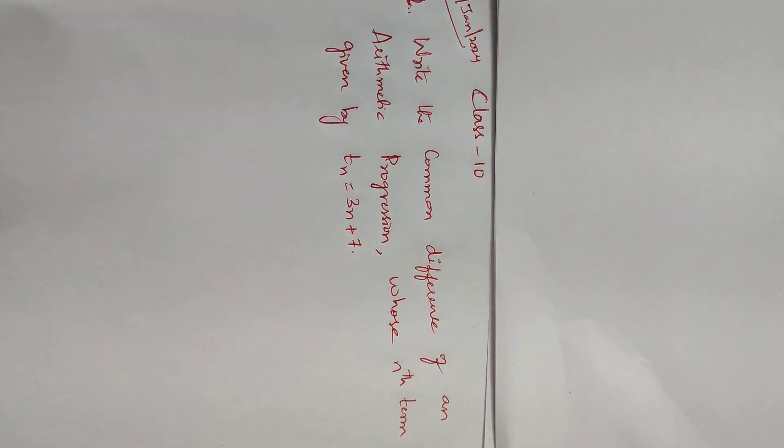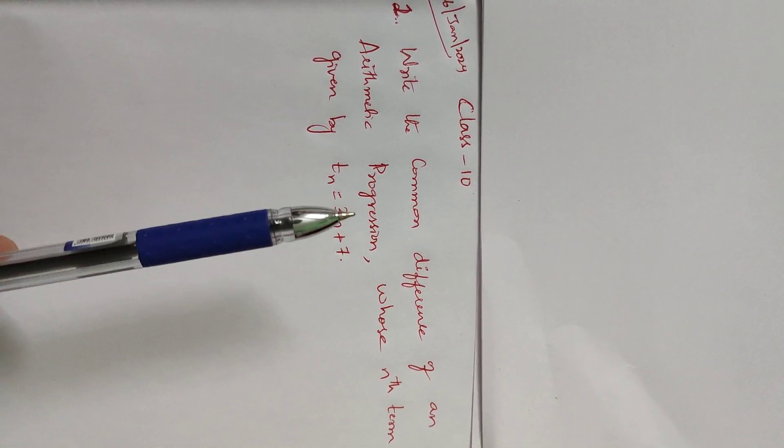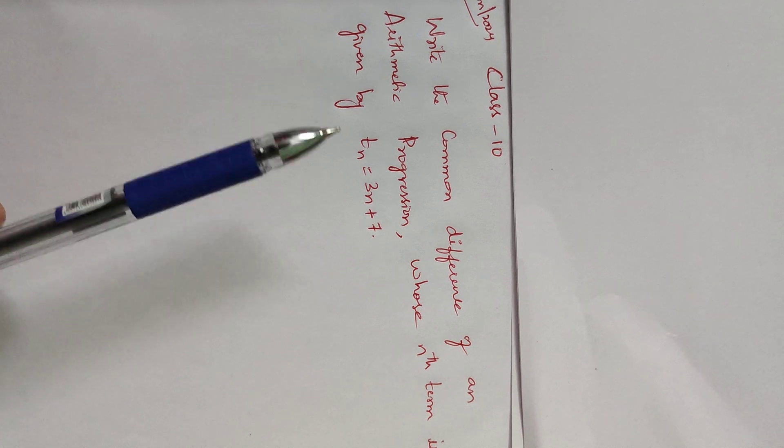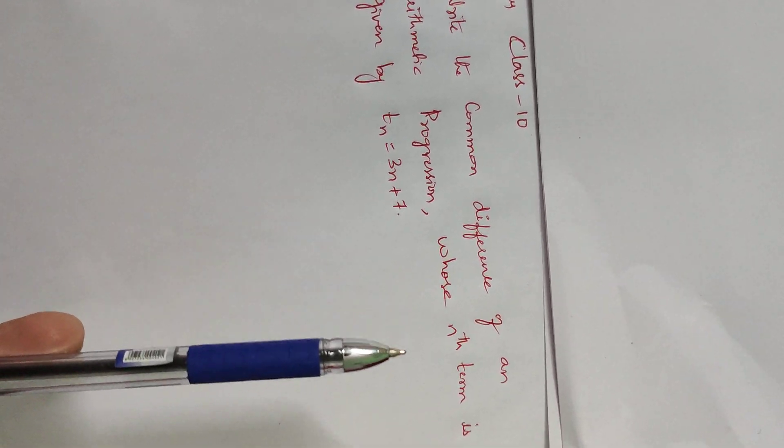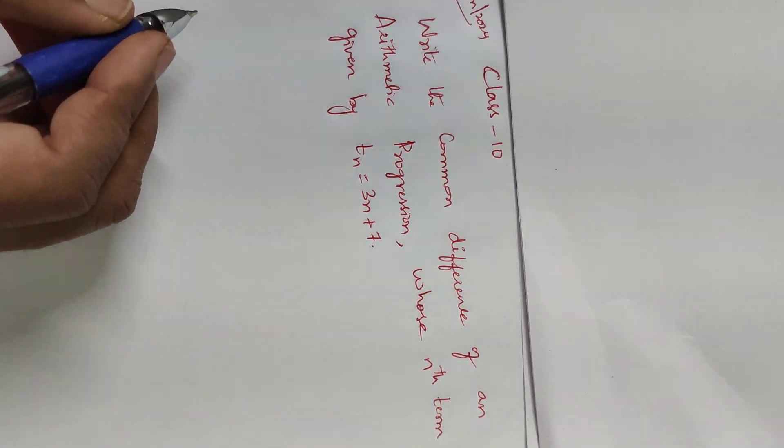The given question is from 10th class arithmetic progressions. We are going to find the common difference of a given arithmetic progression whose nth term is given as T_n equals 3n plus 7.